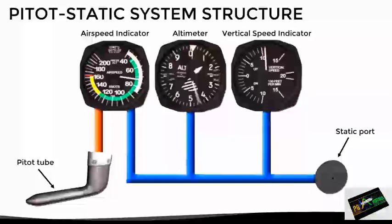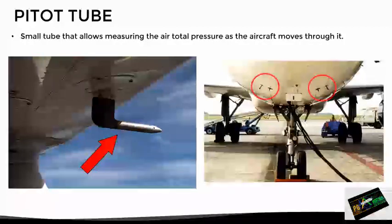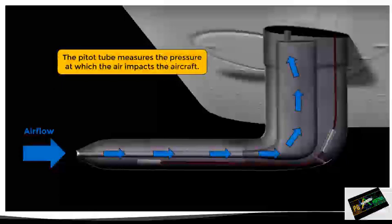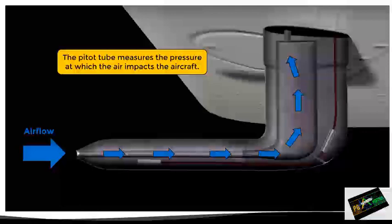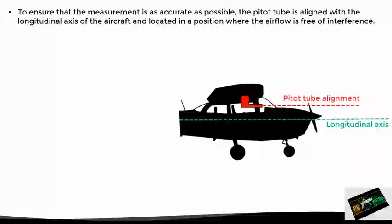We will now see each of these sensors in more detail, starting with the pitot tube. This is a small tube that allows us to measure the total pressure of the air as the plane moves through it. We can find it typically under the wings on small aircraft or in the front of the fuselage on larger aircraft. The idea of the pitot tube is to measure precisely the pressure with which the air impacts the aircraft. As we had already said with the example of the hand, the impact pressure combines the static pressure and the dynamic pressure, meaning that the pitot tube measures the total pressure.